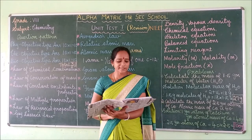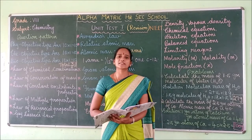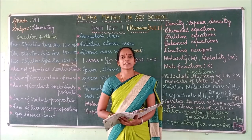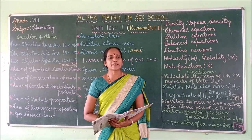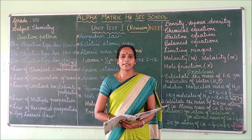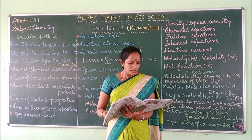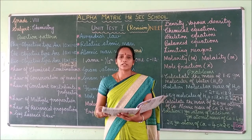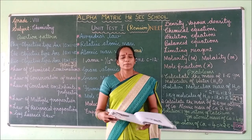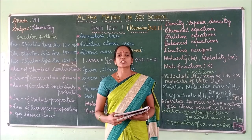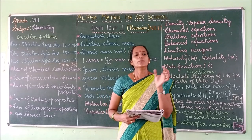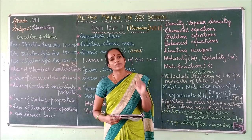Next, the mole concept: one mole is equal to how many particles? One mole is equal to 6.023 × 10²³ particles. Next, empirical formula and molecular formula. Molecular formula shows the actual number of atoms present in the molecule of the compound.